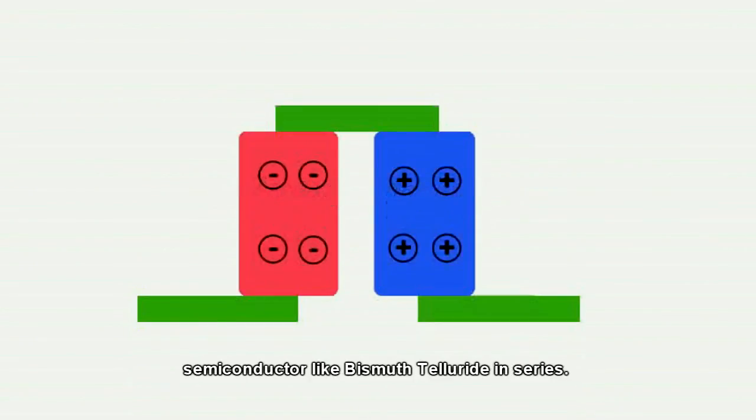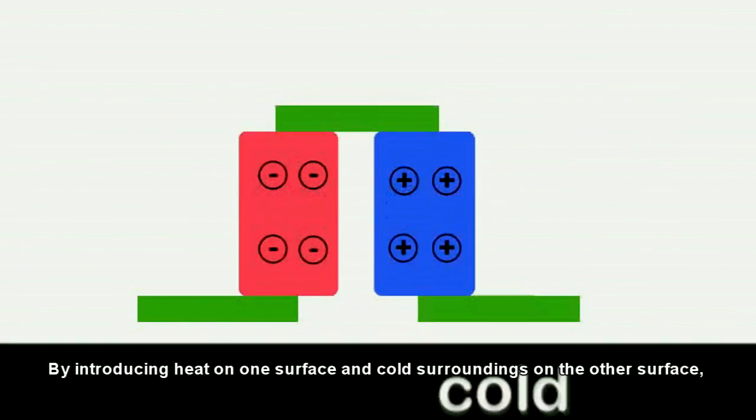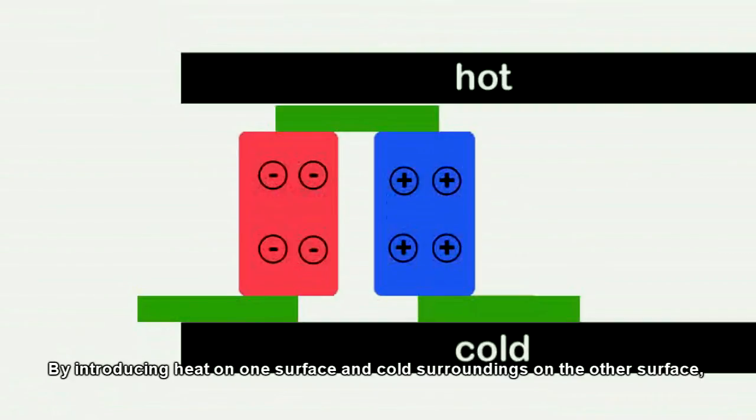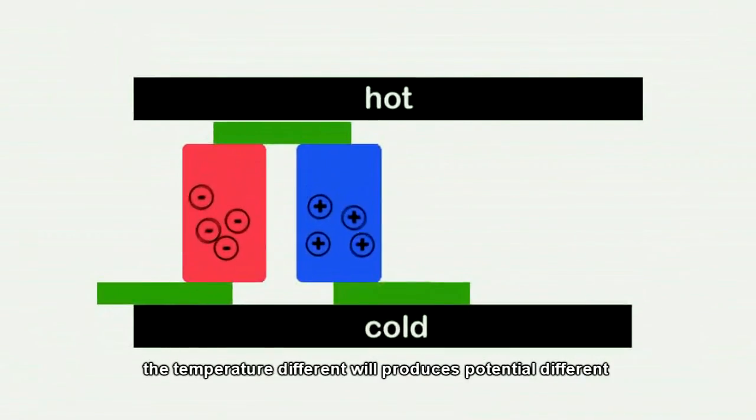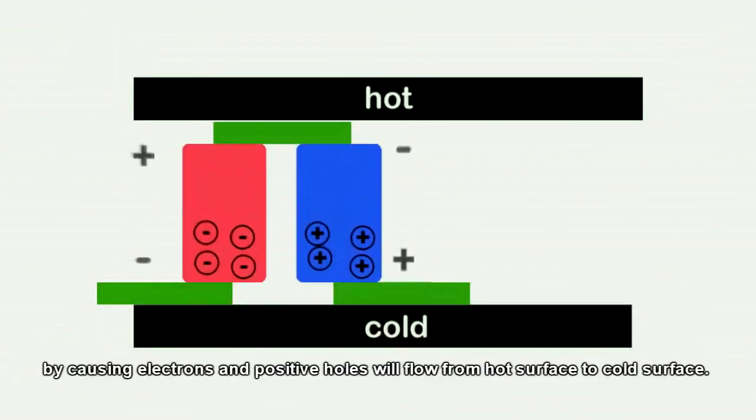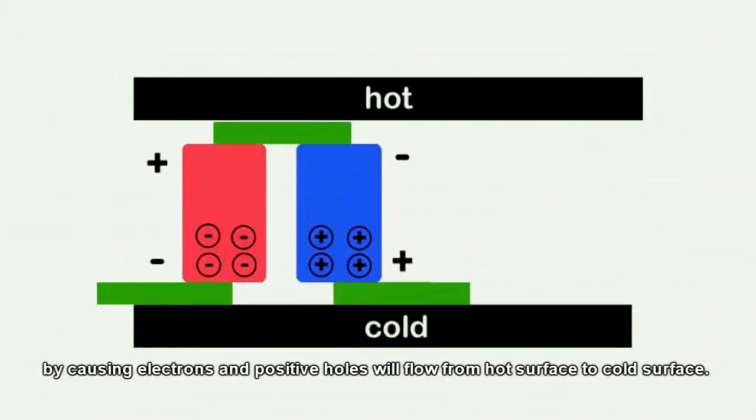By introducing heat on one surface and cold surroundings on the other surface, the temperature difference will produce a potential difference by causing electrons and positive holes to flow from the hot surface to the cold surface.